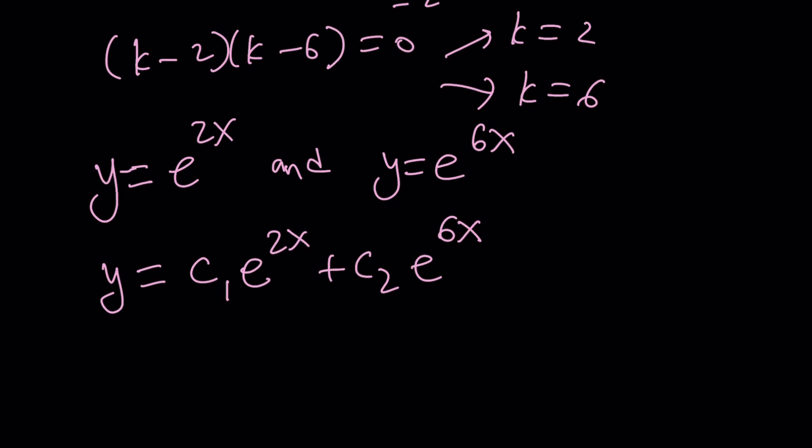Notice that if c1 is 1 and c2 is 0, you get e to the 2x, which is like a specific case, which we already talked about. So this is kind of like a general solution to y, but now I got to find z.